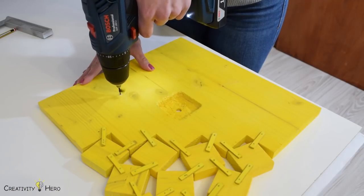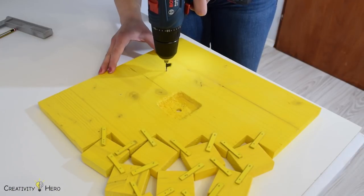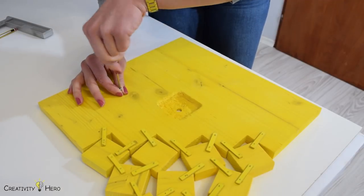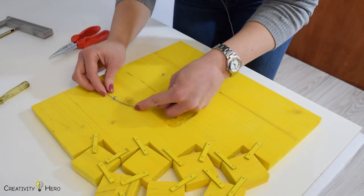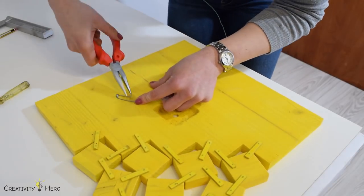For the hanger I used two screws and a wire. Be sure to make it wide enough so that you can easily move it horizontally when hanging the clock on the wall.